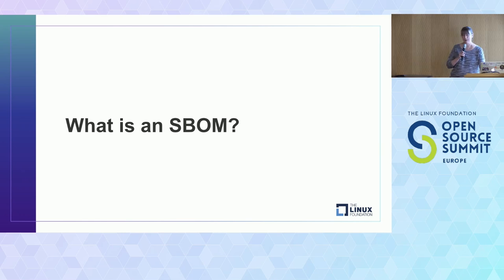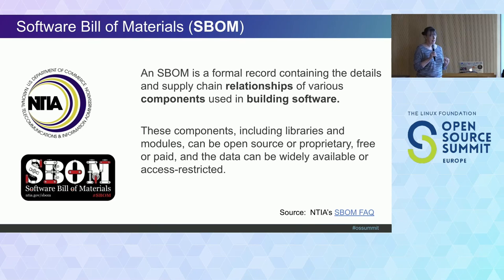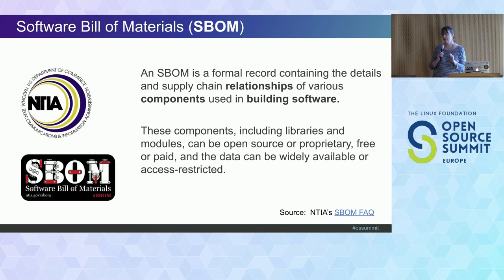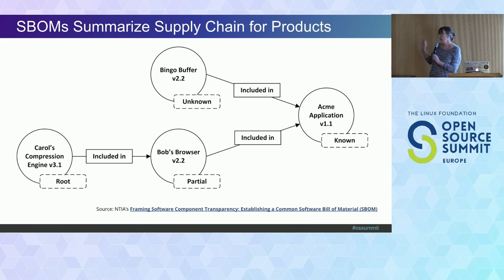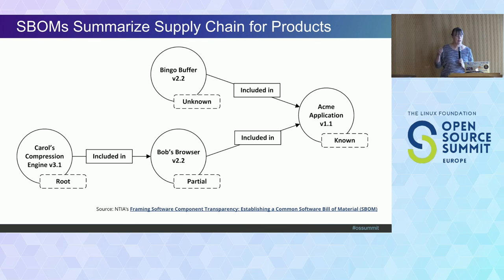A quick intro: when I talk about SBOM I mean a formal record containing the details and supply chain relationships between components used for building software. Components could be source files, libraries, packages, or full distros — all valid components that could be proprietary or free. This is all part of our software supply chain today. Some work in NTIA was just to define a basic supply chain. There are things that are known and things that are unknown, and being explicit about whether you depend on something, include it, or whether there are things you just don't know — articulating that is at the heart of the minimum SBOM today.